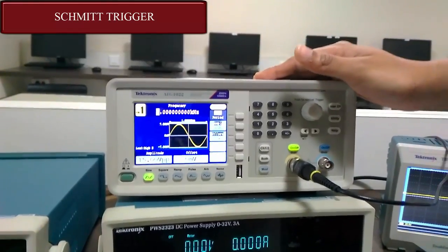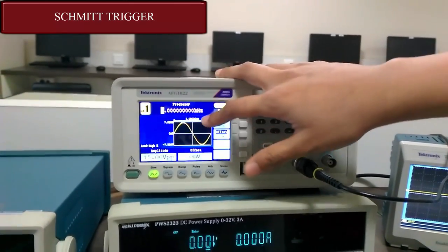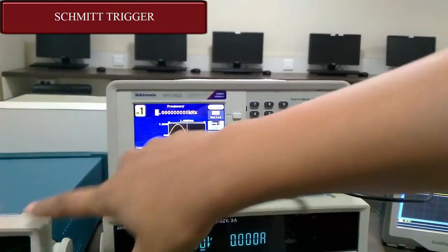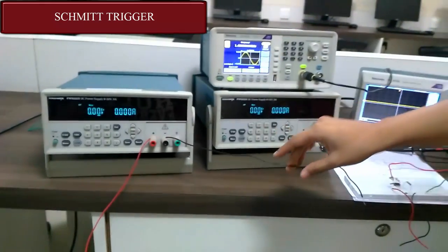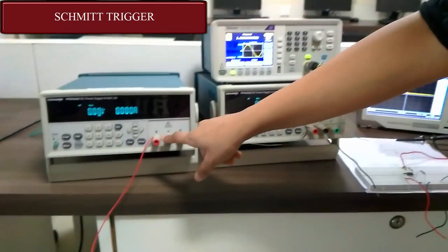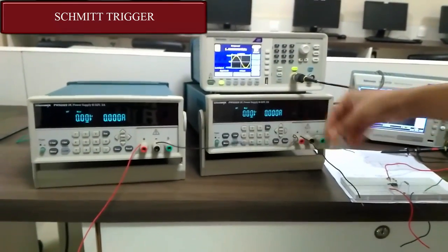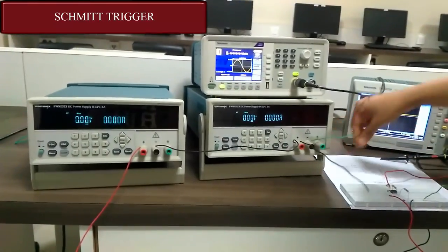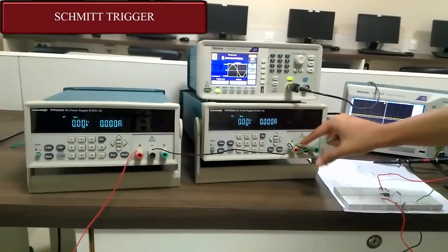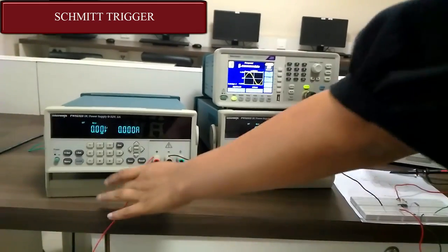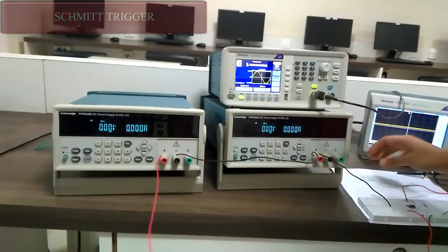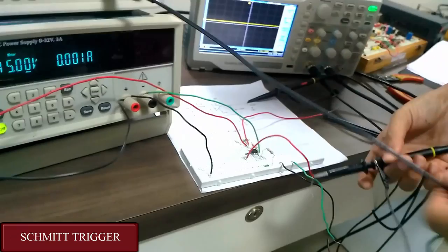This is the function generator. I have already set it for 1 KHz and 15 volt peak to peak. These are the dual power supplies. I have connected the negative of this to the positive of this and taken the ground from there. And this wire is from the negative which acts as negative volt, and this gives the positive volt. Now I am giving the input.